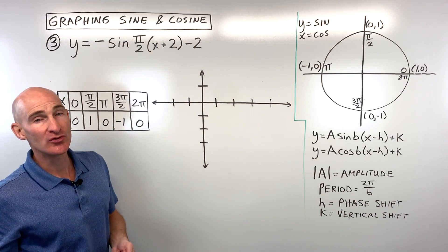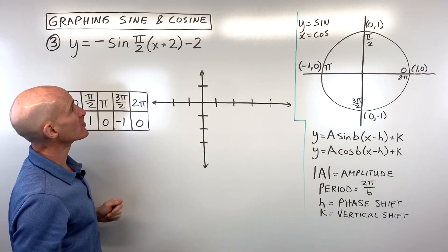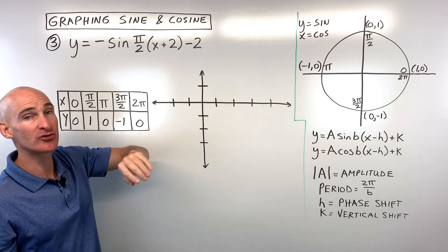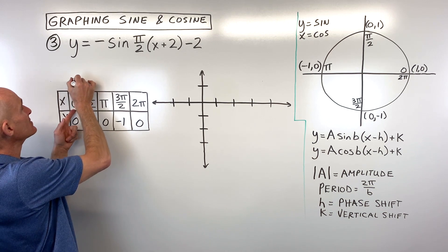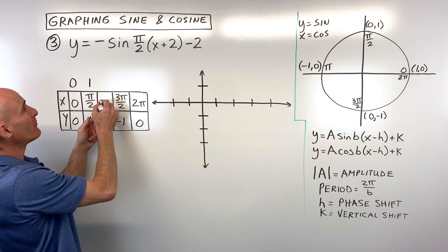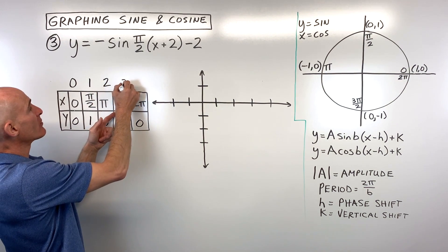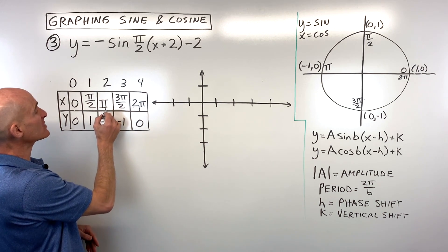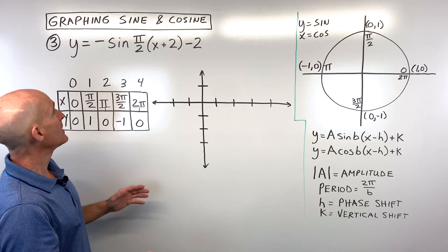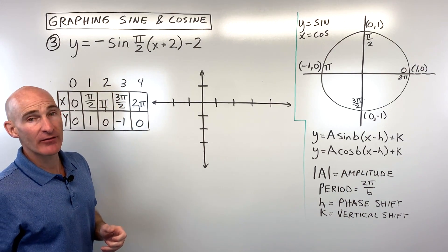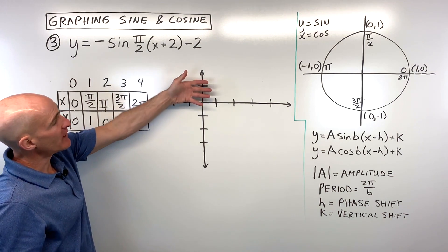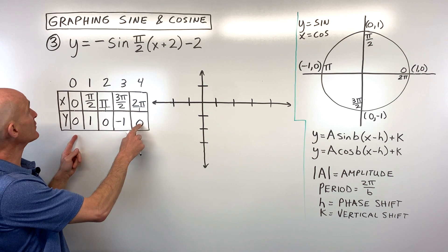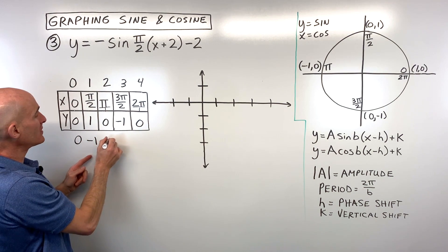Now let's look at π/2 grouped with x — it has the reciprocal effect, multiplying all x-values by 2/π. So: 0·(2/π) = 0, π/2·(2/π) = 1, π·(2/π) = 2, 3π/2·(2/π) = 3, 2π·(2/π) = 4. Now the negative coefficient: the amplitude is one, but the negative reflects the graph over the x-axis, making positive y-values negative and vice versa. Multiply all y-values by negative one: 0, -1, 0, 1, 0.